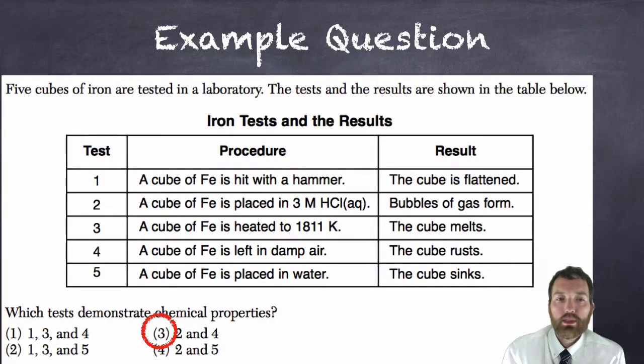The answer of course is three: test two and test four. Test two said a cube of iron is placed in three molar hydrochloric acid. So we're reacting the iron with the acid and the result is bubbles of gas form. That's evidence of a chemical reaction. We're going to talk about that in a little bit in this video. But that is evidence of a chemical reaction, so that makes it a chemical property, the ability to react with HCl hydrochloric acid.